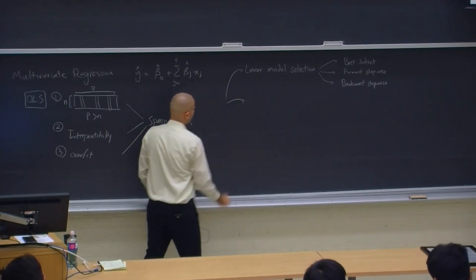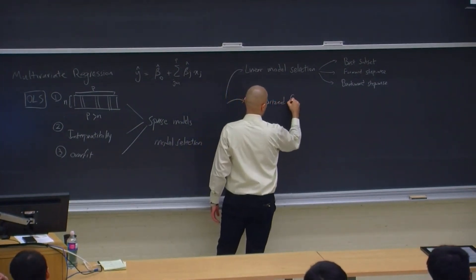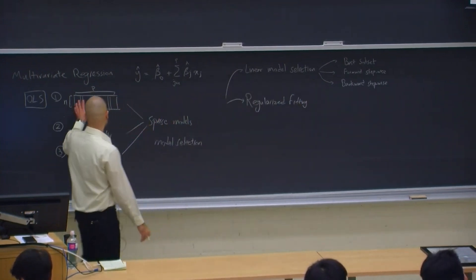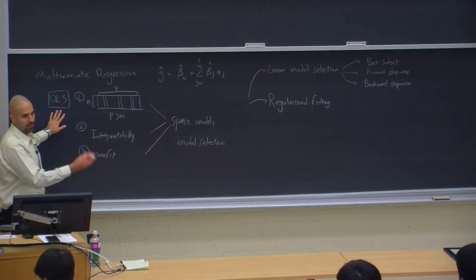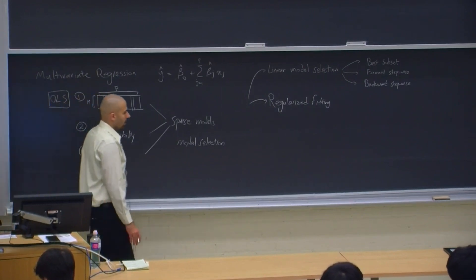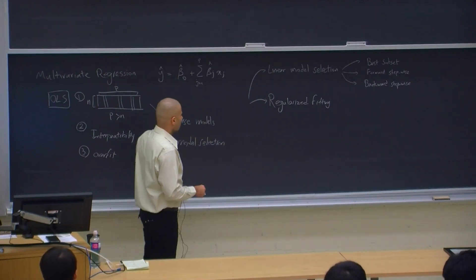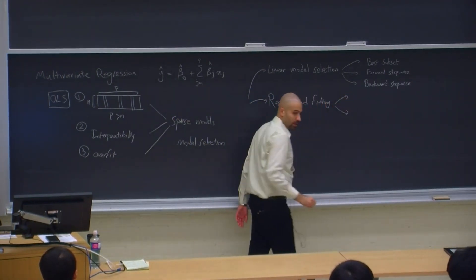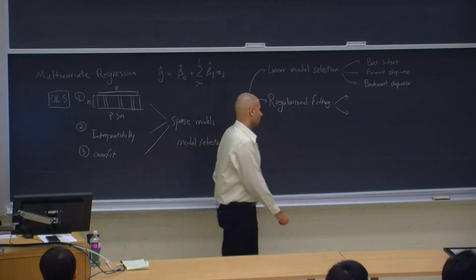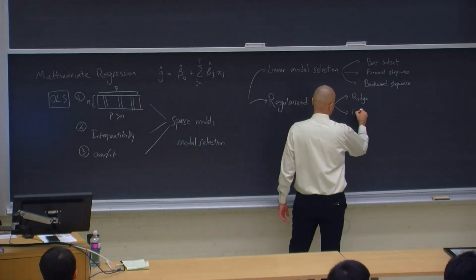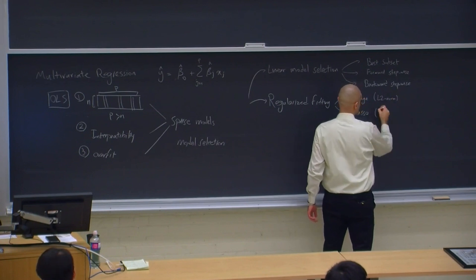The second overall approach for getting a sparse model is regularized fitting. This means we include all predictors, but instead of using OLS to estimate the parameters, we use a different fitting procedure that has a penalty for estimating a model with large coefficient values. You may remember this from APS 1070 — these are methods using L1 or L2 norm penalties. One is ridge regression (L2 norm penalty) and the other is lasso regression (L1 norm).